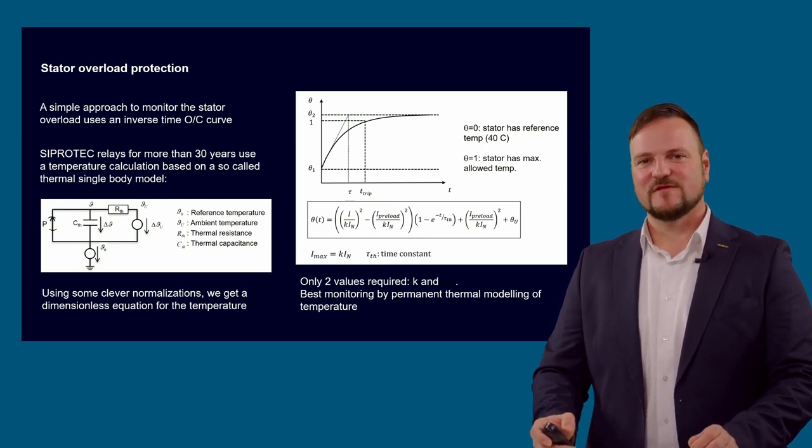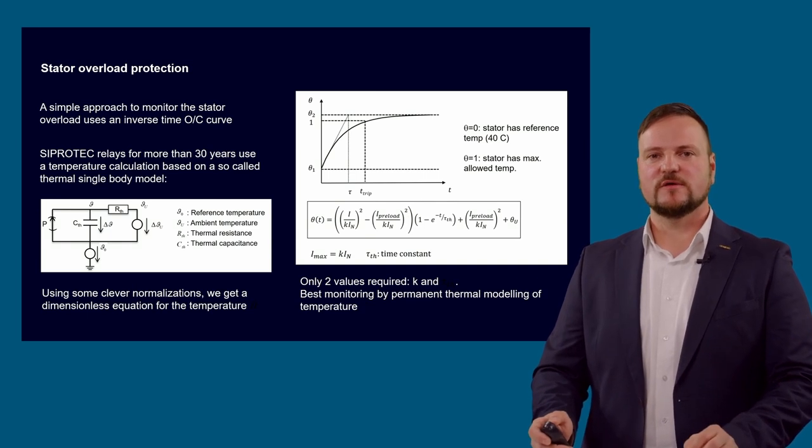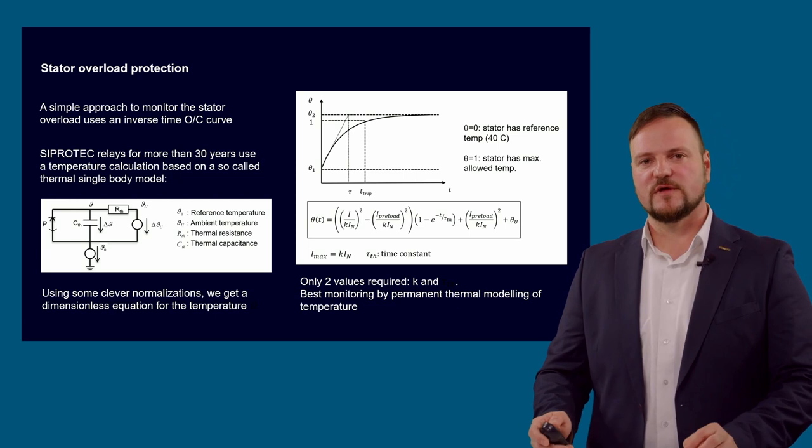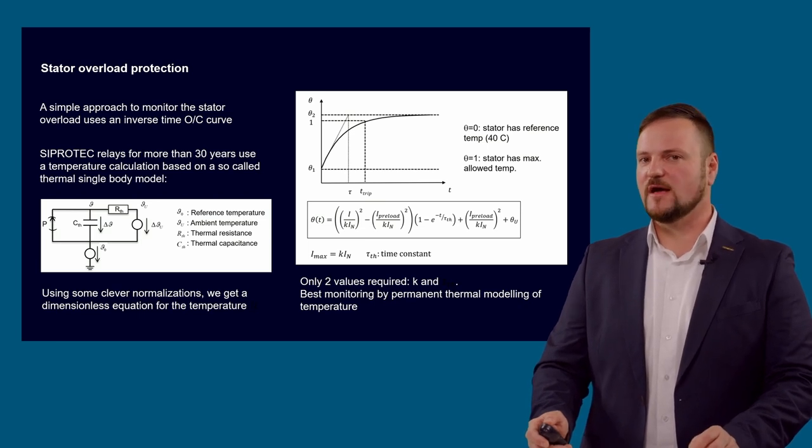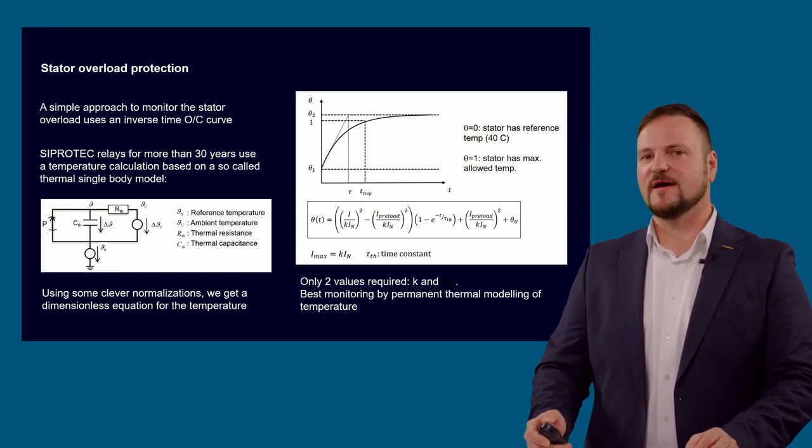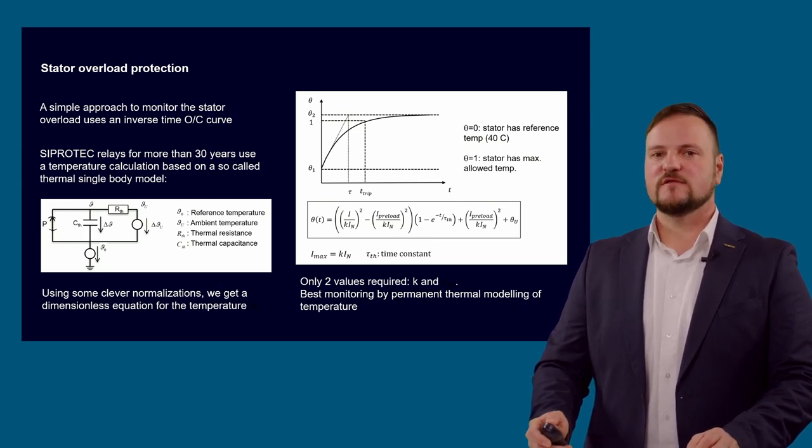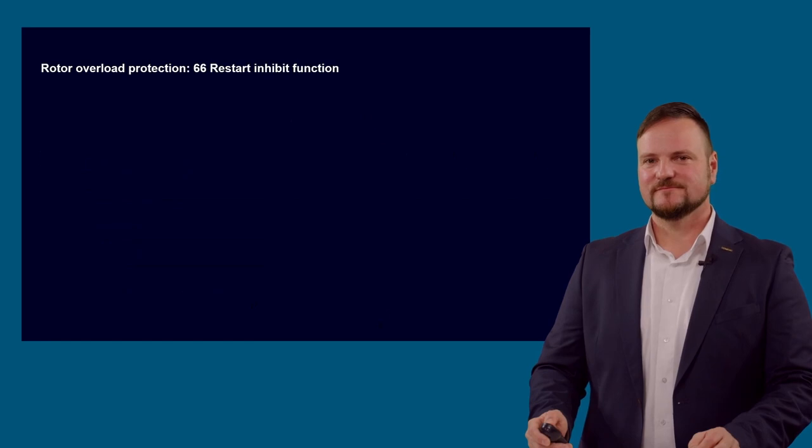The second parameter, this is the so-called k-factor, where k times the nominal current is the maximum permanently permissible current of the machine. This factor normally is around 1.1 or 1.2, that means 110 or 120 percent of the nominal current. The second parameter is the thermal time constant tau, which describes how fast the motor heats up to the new end temperature. Typical values here are between 10 and 30 minutes for a motor. For a permanently fluctuating current, the model increases in a way that the temperature follows accordingly. This model guarantees a permanent supervision of the stator temperature.